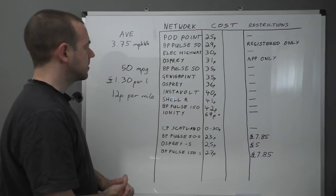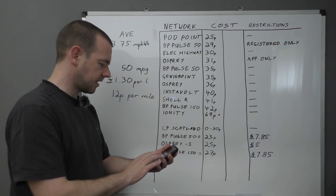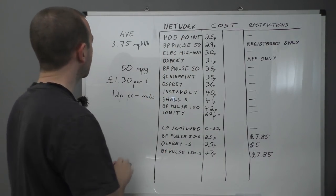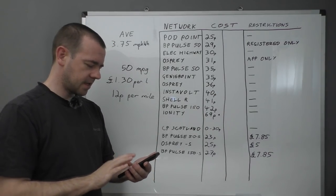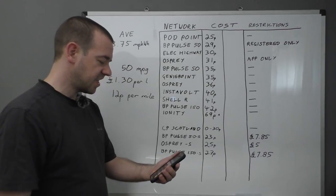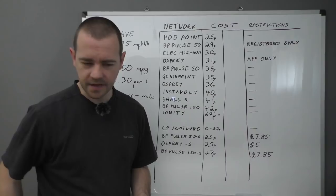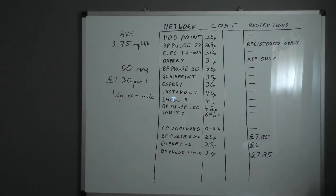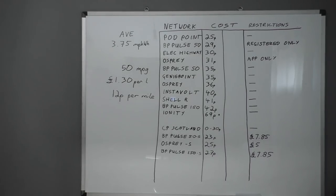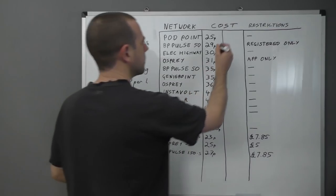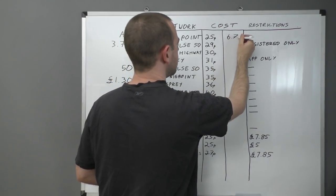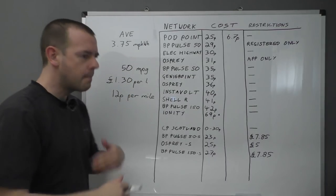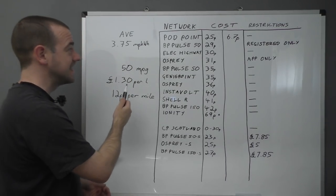So what do we get here? Let's get the calculator out again and do some more figures. So, 25, let's do the cheapest first, Pod Point. 25 at 3.75 miles per kilowatt hour comes out at 6.7. £6.7 per mile, if you paid 25 per kilowatt hour and got 3.75 miles per kilowatt hour. So, so far, it's nearly half the cost.